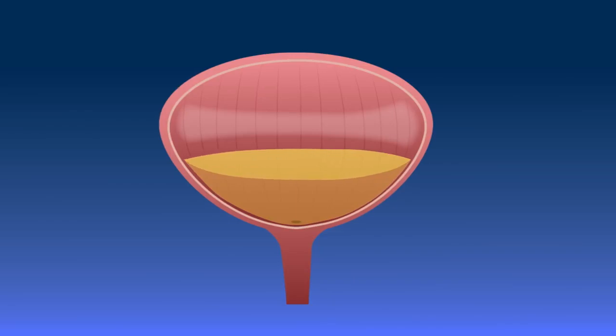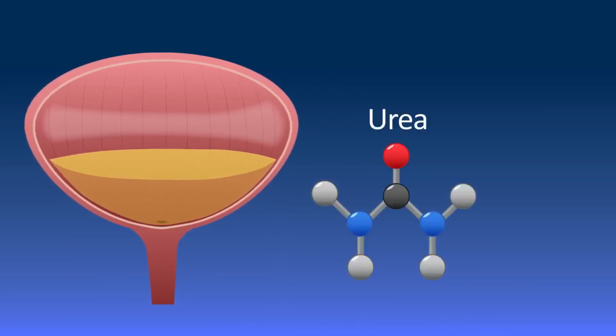The liquid that collects in the bladder is called the urine. It contains urea, which is a waste product from the breakdown of the excess protein. It also contains excess water that the body doesn't need along with some ions like sodium and potassium.